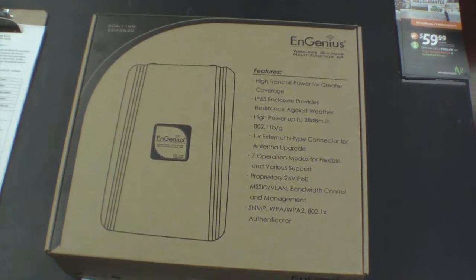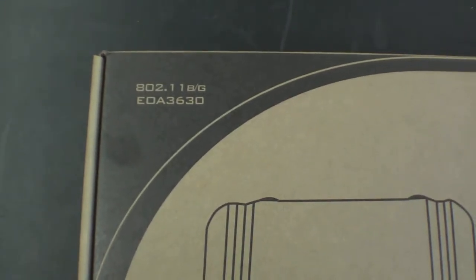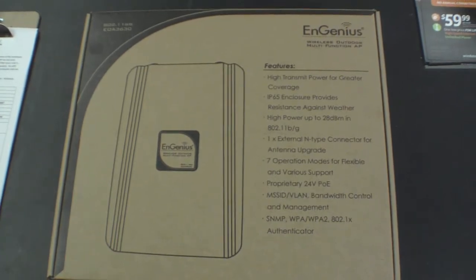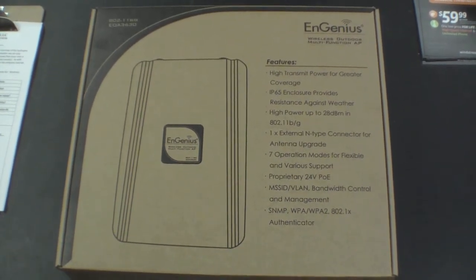Here we have an NGenius EOA3630. You can see it's an 802.11 device, BNG. I believe it supports connections up to 108 megabits per second when you're using two of these for bridging.